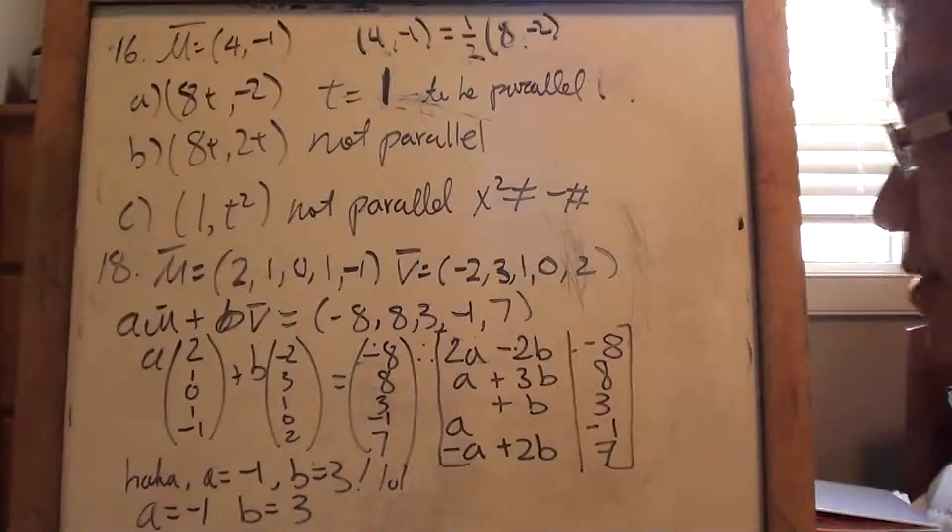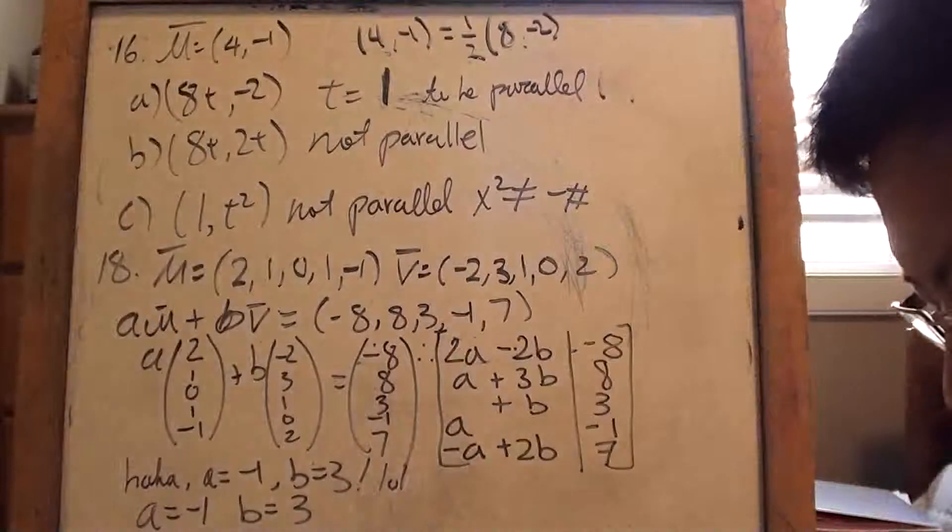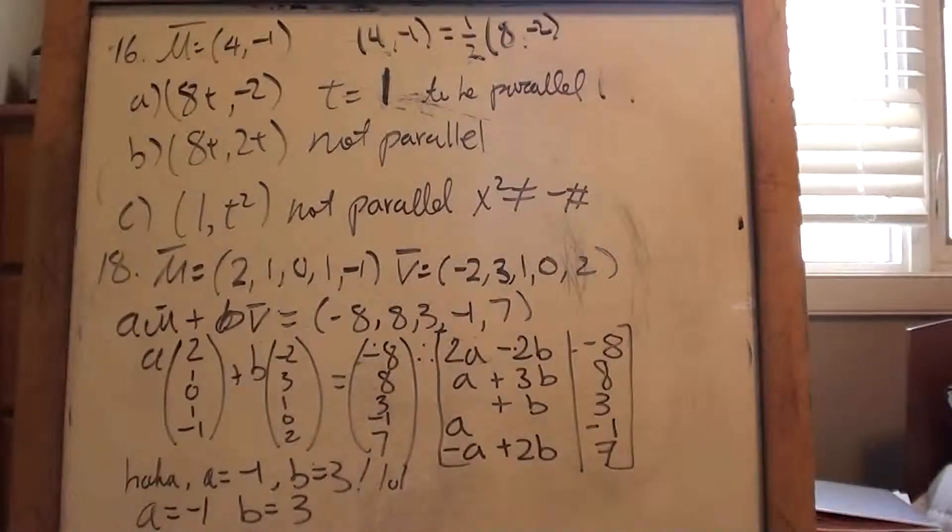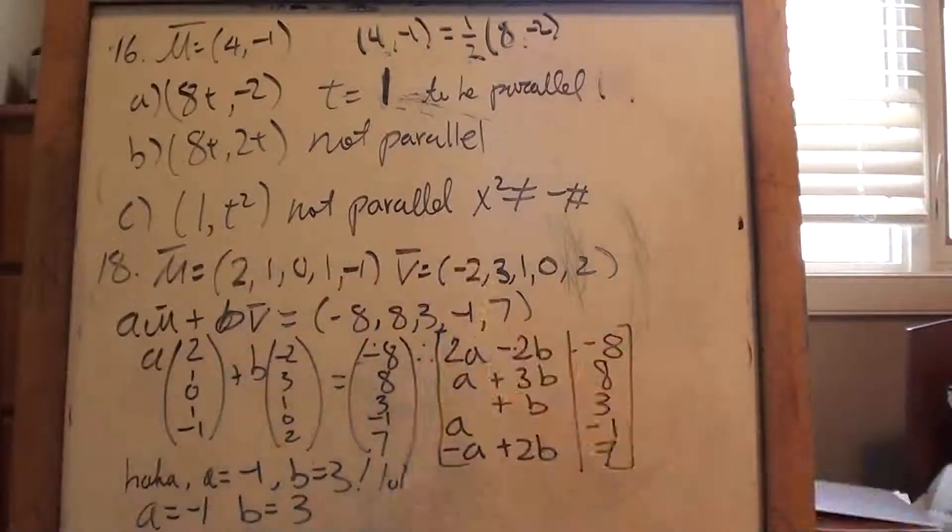18. This is where it gets a little bit fun. 17 should be on the solution manual. So I trust that you can look it up, you know, but so I thought I'll just purposely do 18 instead. That actually turned out to be a very blessing in disguise. And I'll tell you why.